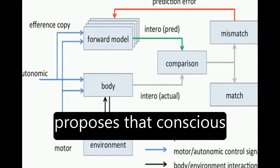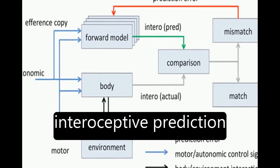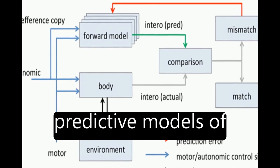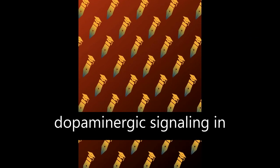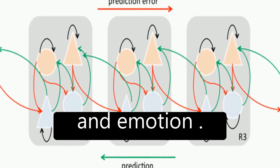The theoretical model proposes that conscious presence is based on interoceptive prediction error, informed by predictive models of agency, hierarchical predictive coding, dopaminergic signaling in cortex, and the role of the anterior insular cortex in interoception and emotion.